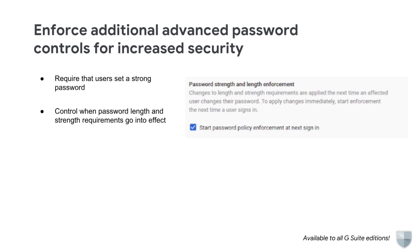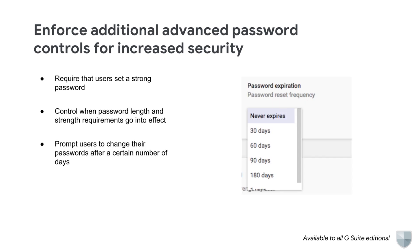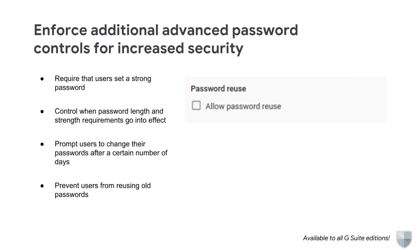You can choose to enforce password length and strength requirements either the next time a user changes their password or the next time they log in. To apply changes immediately, check the box next to Start Password Policy Enforcement at Next Sign-in. If you're unsure about whether you need to do this, we recommend that you leave this setting as Never. To prevent password reuse, we recommend you leave the box for Allow Password Reuse unchecked — this is the default. For more information on advanced password controls, visit the help center.